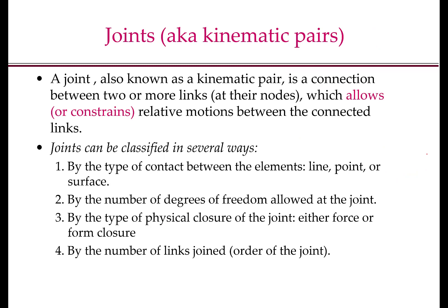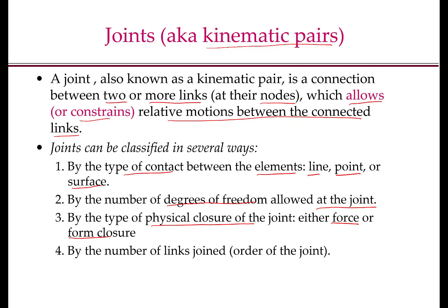Now let's look at joints, also known as kinematic pairs. A joint is a connection between two or more links at their nodes, which allows or constrains relative motions between the connected links. Joints can be classified in several ways: by the type of contact between the elements (line, point, or surface contact), by the number of degrees of freedom allowed at the joint, by the type of physical closure of the joint (force or form closure), and by the number of links joined, also known as the order of the joint.